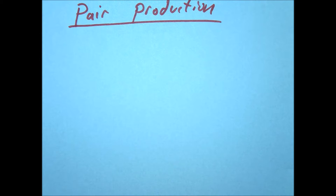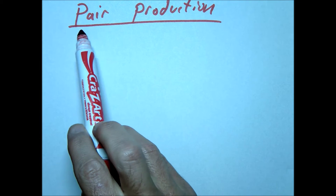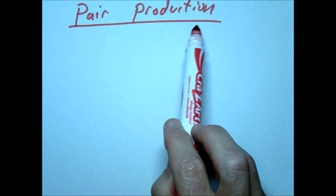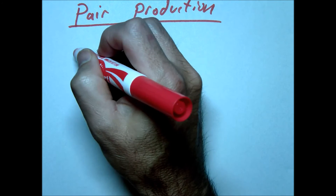Today we're going to look at two processes that can occur with particles and their antiparticles. The first thing we're going to look at is what's called pair production.